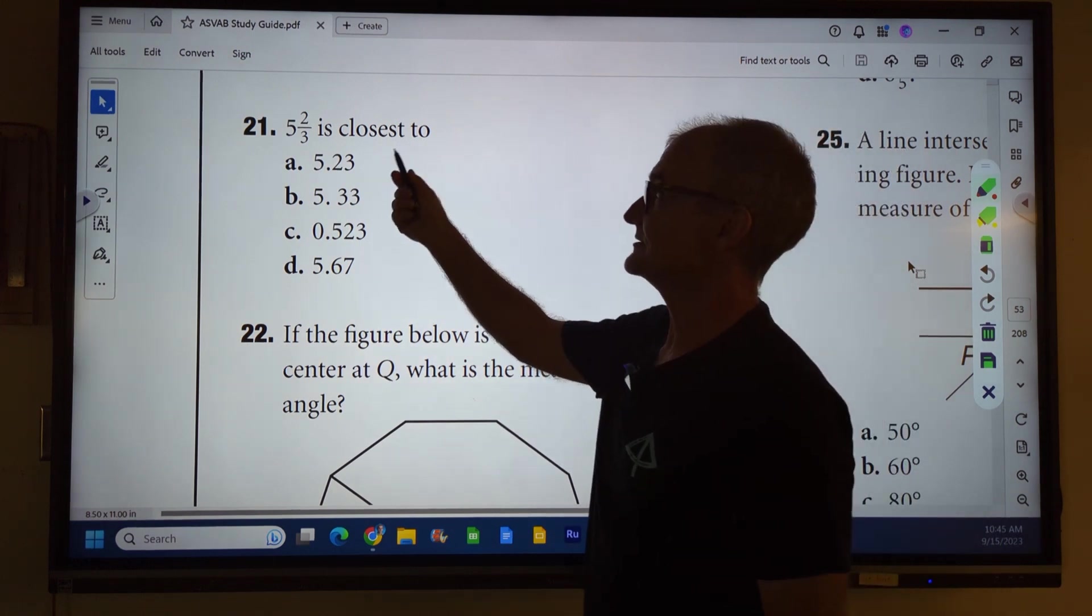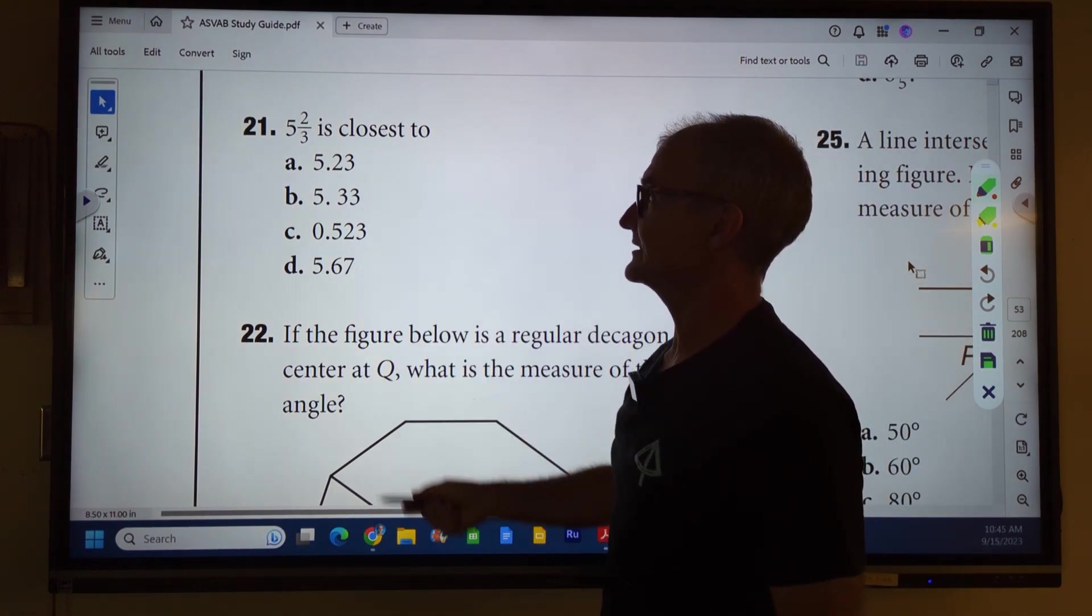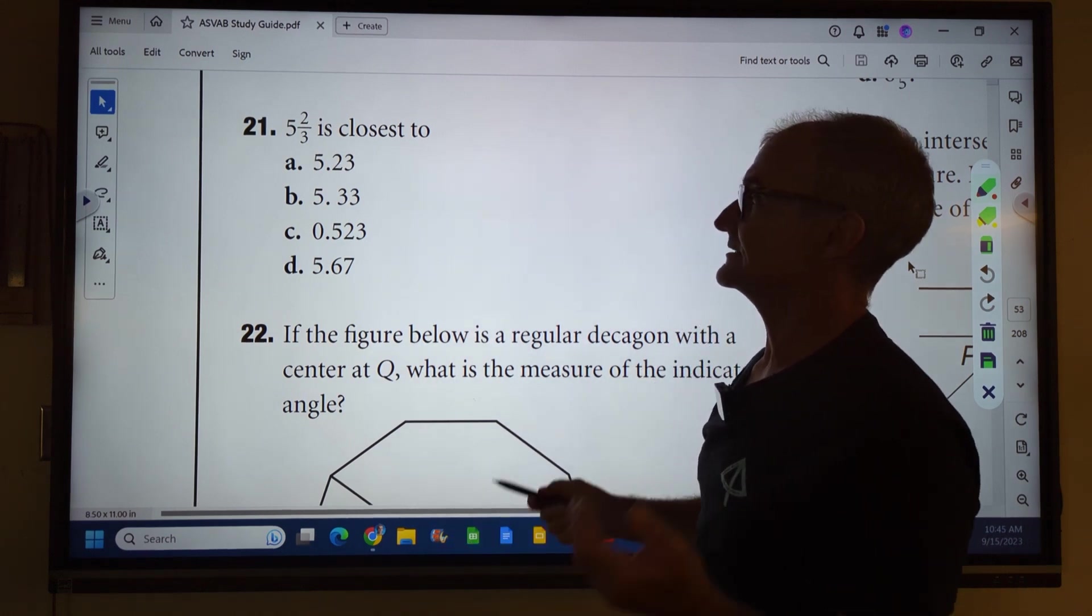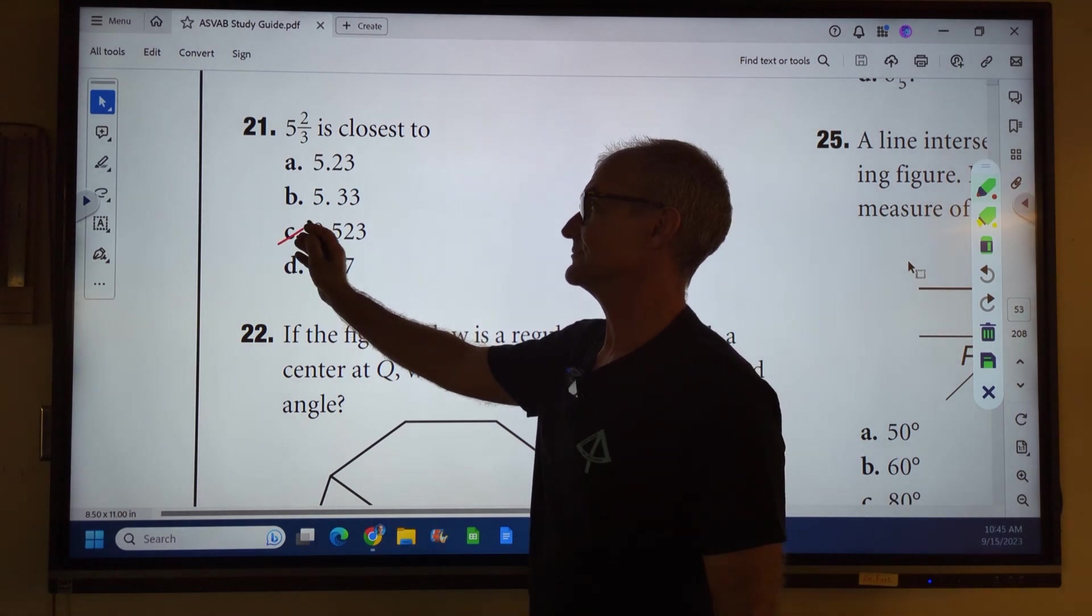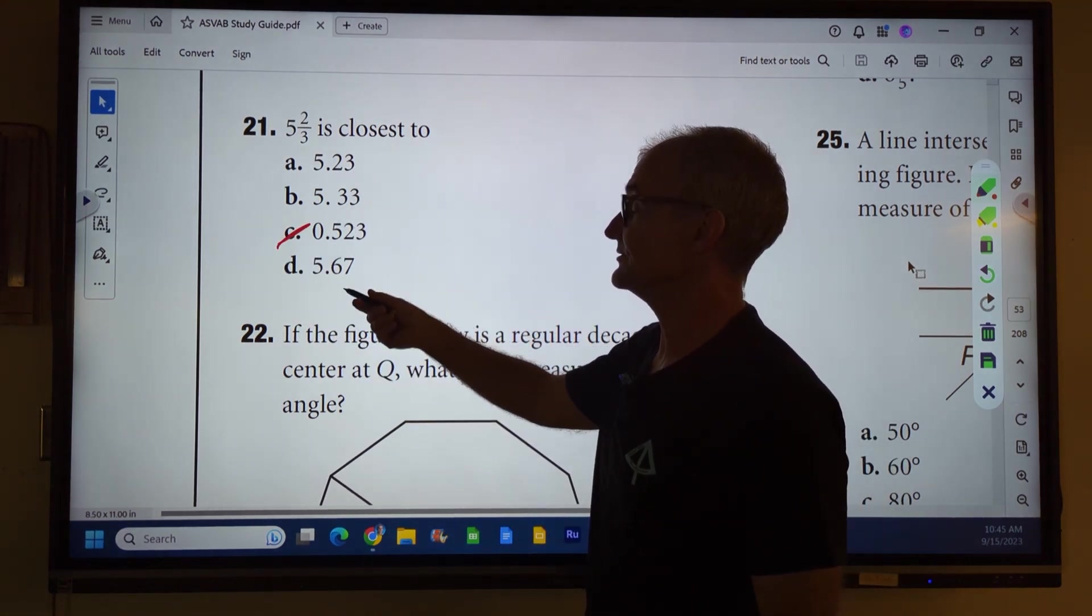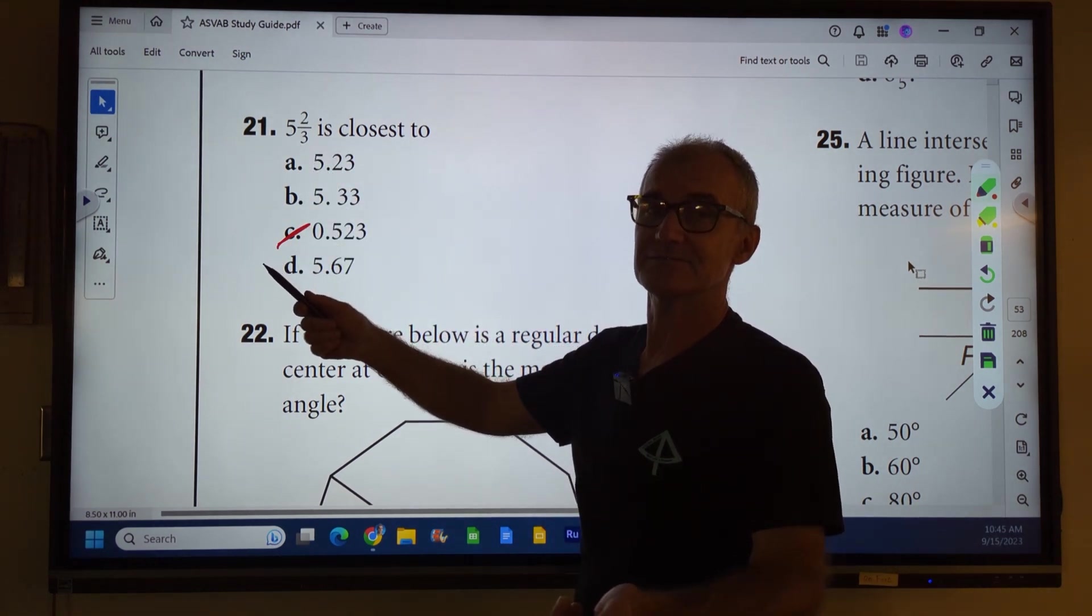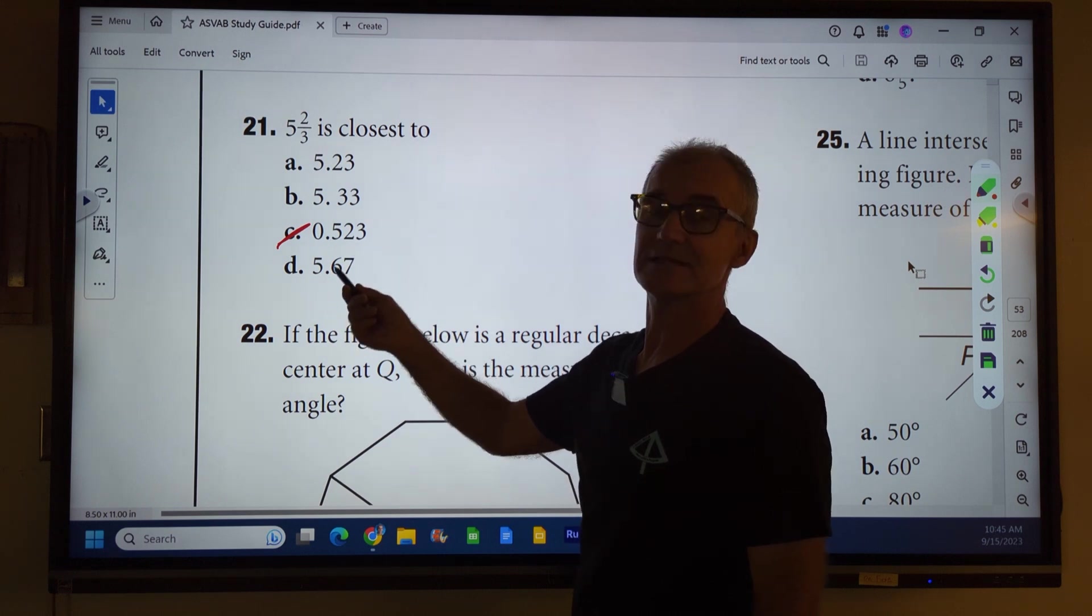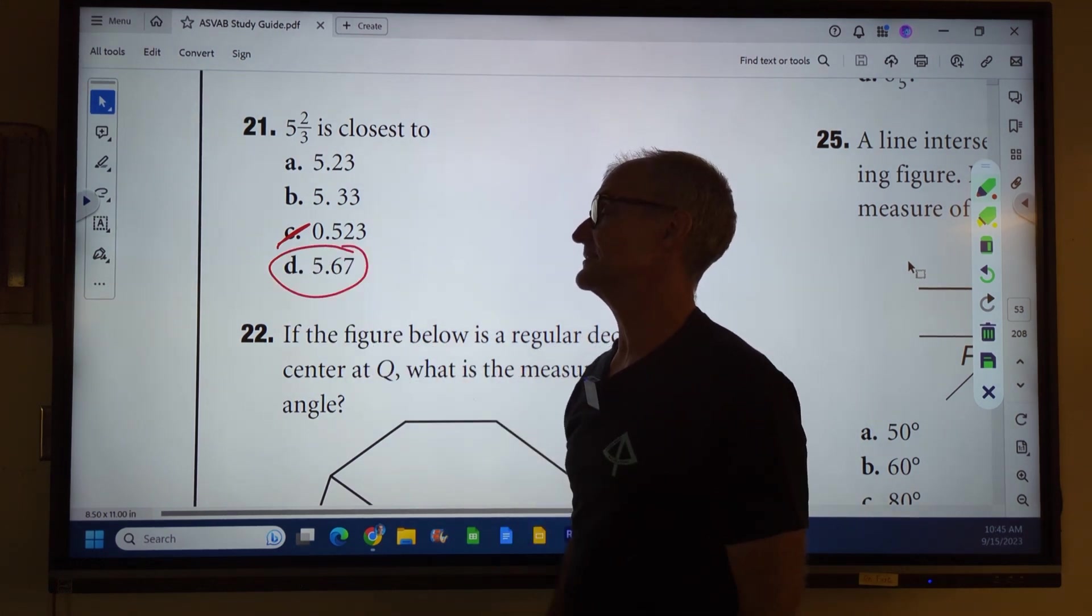Number 21: Five and two-thirds is closest to these. Which one of these? Well, first thing I do is I glance down on my answers and this doesn't even have a five in it, so this one right here is out. So now I got to pick between these three. Two-thirds is greater than a half, right? So there's only one answer up here greater than 5.5 and that's answer D, so it has to be answer D.